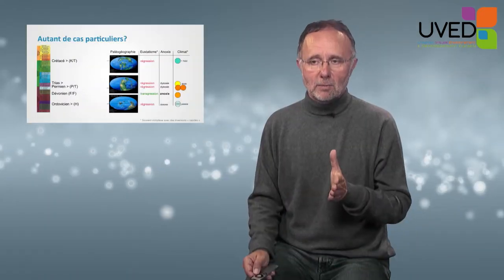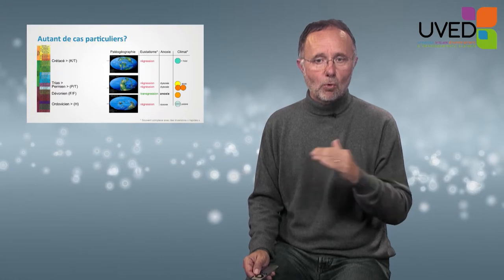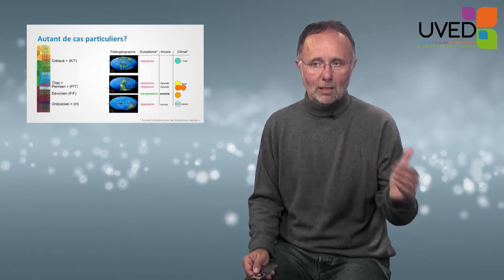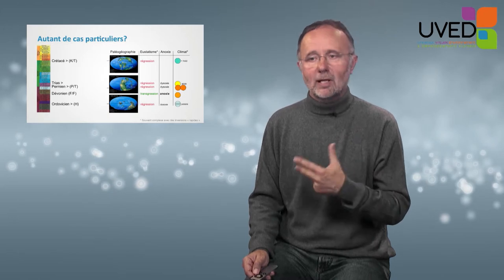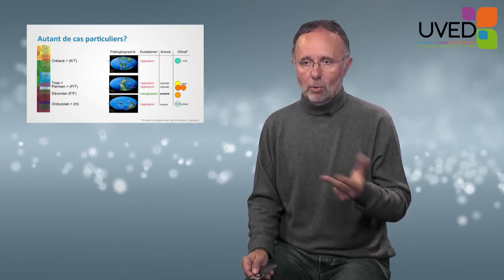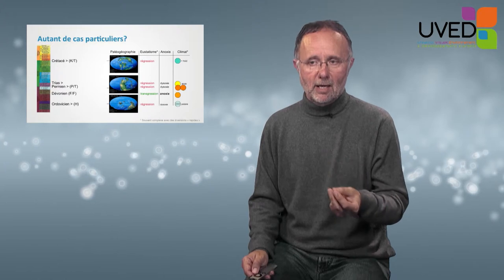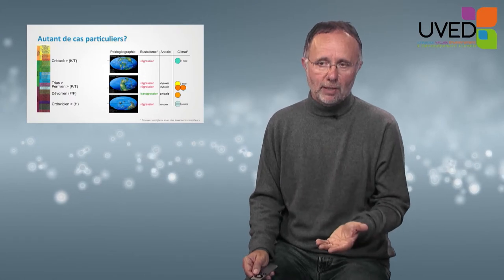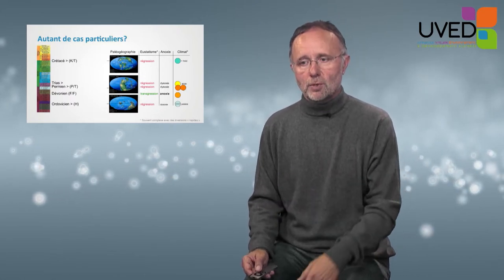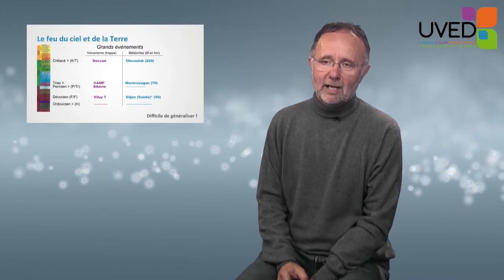When a meteorite hits the Earth, or there is a volcanic eruption that impacts planet Earth, what happens when particles are released into the atmosphere? The sky becomes dark. There is a sort of nuclear winter and the Earth's surface cools down. Then fairly quickly, greenhouse effect gases — CO2 and sulfur — are released, and there will be a greenhouse effect and the surface of the Earth will warm up. There is an alternating of cooling down and warming up. This is what probably happened, except in the Ordovician, which was probably an ice age.